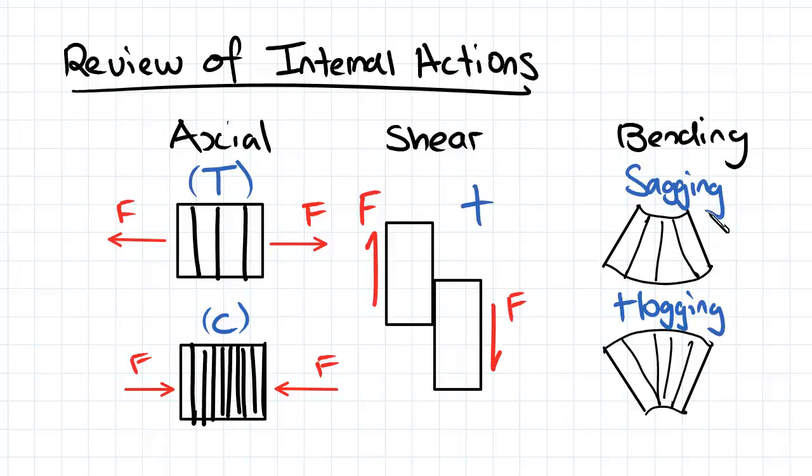Sagging has a deformation that looks a bit like this. The top is in compression and the bottom in tension is defined as positive. And hogging, the top is in tension and the bottom is in compression and has a deformation that looks like this. That's defined as negative in this course.